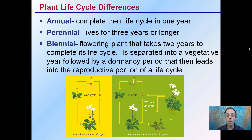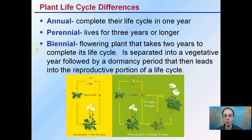There are three main classifications for plant life cycles. First is an annual, which completes its life cycle in one year. A perennial lives for three years or longer. A biannual is a flowering plant that takes two years to complete its life cycle, separating into a vegetative year followed by a dormancy period and then leading into a reproductive portion of that plant's life cycle.